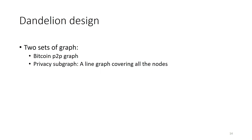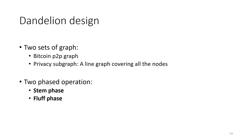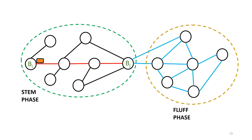Now we look at how to use this framework to quantify the anonymity of individual schemes, starting with the hop-by-hop routing scheme Dandelion. Dandelion's function depends on two graphs: the Bitcoin peer-to-peer graph, and an additional privacy subgraph, which is a part of the actual peer-to-peer graph that covers all nodes. Dandelion creates a line graph as its privacy subgraph. Once these two graphs are in place, Dandelion works in two phases: the stem phase and the fluff phase.